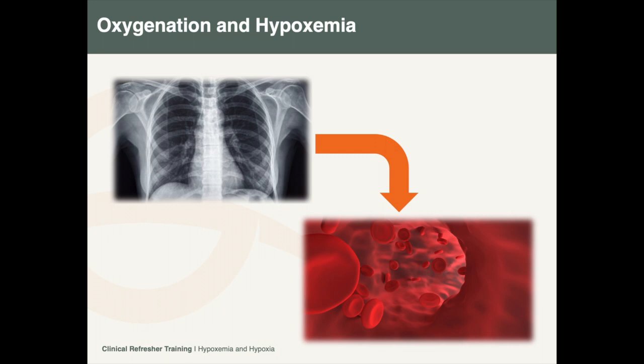When we breathe in, we pull air into our lungs. Room air contains 21% oxygen. When oxygen enters our lungs, it travels to the alveoli, where it diffuses from the alveoli into the pulmonary capillaries.